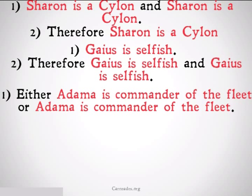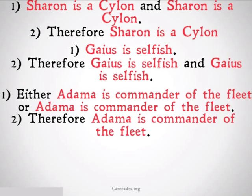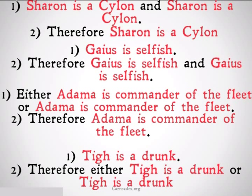Either Adama is commander of the fleet, or Adama is commander of the fleet. Therefore, Adama is commander of the fleet. Note: we've switched from conjunction to disjunction — it works with either. Tighe is a drunk. Therefore, either Tighe is a drunk, or Tighe is a drunk.